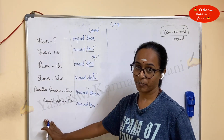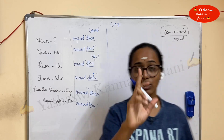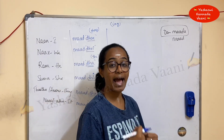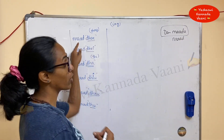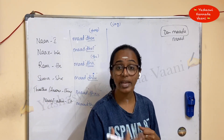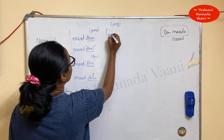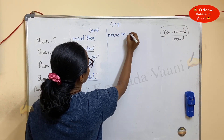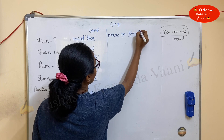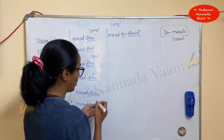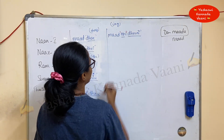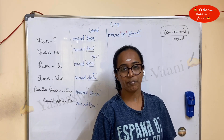The verb I'll take is 'maad' — 'maad' in colloquial version. I already learned 'I did' is 'nan maad de.' Now I want to say 'I am doing': nan maad ti di ni. I'll split it into two parts so you will understand easily — 'maad ti di ni' means 'I am doing.'